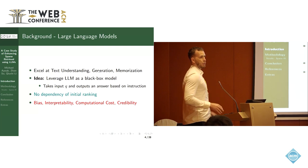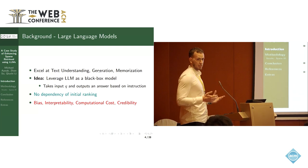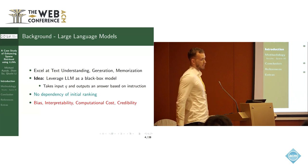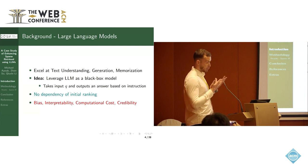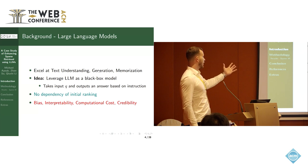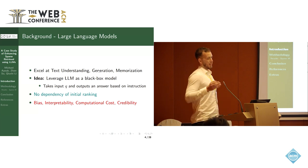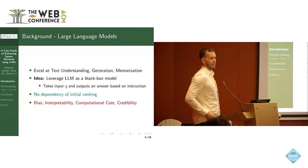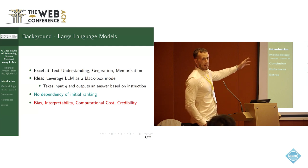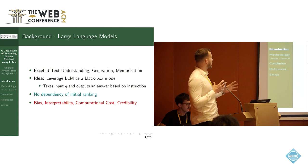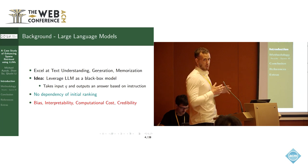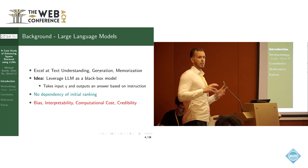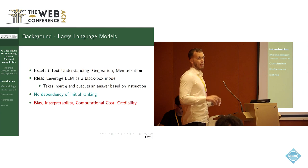Recently, large language models have shown promising results and have excelled at text understanding, text generation, and memorization, which makes them a suitable candidate for a new way of applying query expansion. Our idea is to leverage an LLM as a black box model, where we use the LLM with an input query Q and provide it with some kind of instruction. This allows us to skip the initial ranking phase seen in classical query expansion, so we don't have this dependency on the initial ranking — we can simply generate an output based on the query itself.